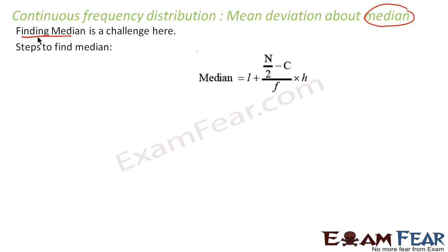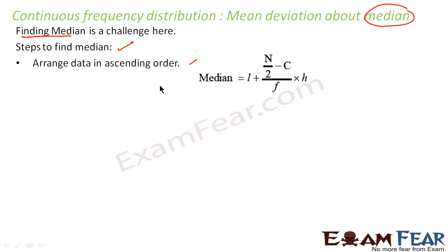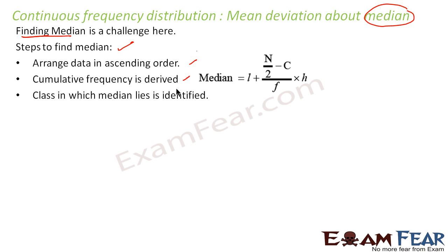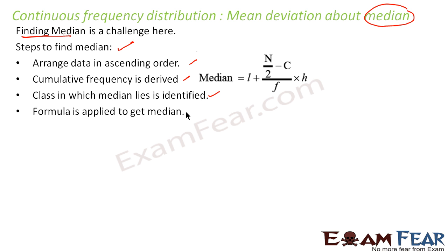Let's write the steps to find the median. The first step is to arrange the data in ascending order. Once data is arranged in ascending order, we have to find the cumulative frequency. Once the cumulative frequency is derived, we have to find the class in which the median lies.